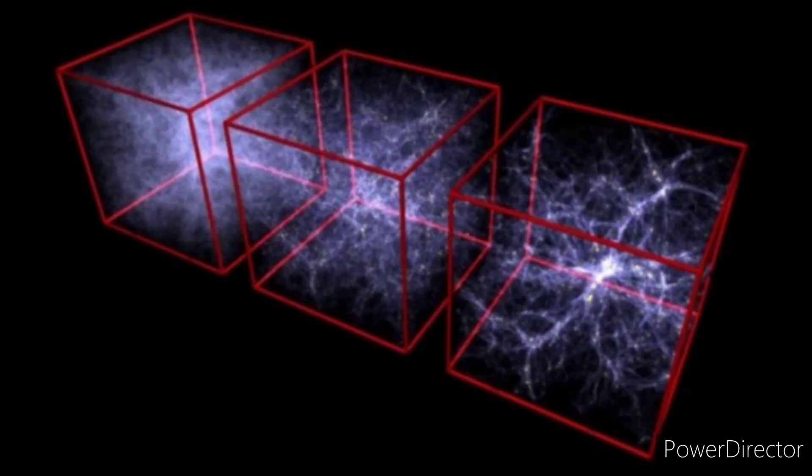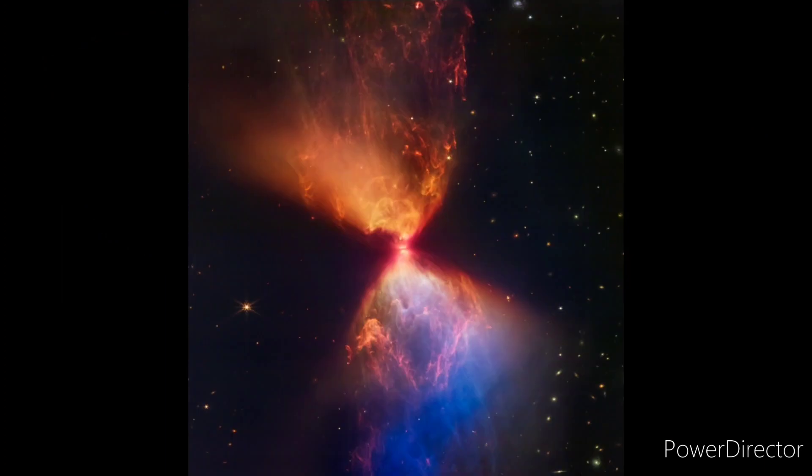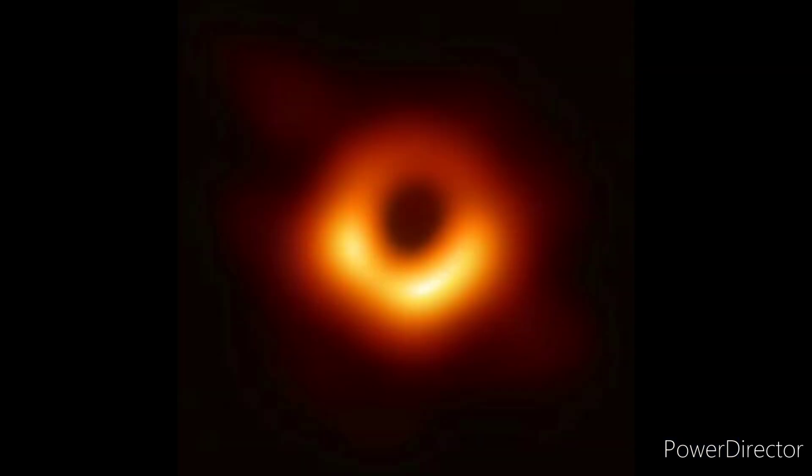If you guys want to learn more about dark matter and dark energy, by the way, you can click on the video in the top right. Then, in 100 trillion years, star formations will not be possible anymore. Only objects like white dwarves and black holes will exist.